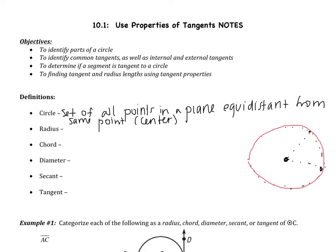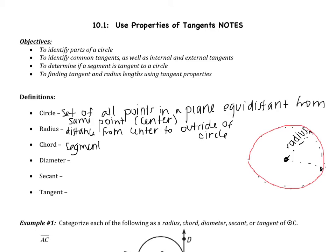That distance from the center to the outside of the circle is called the radius. So in our example, this line segment from center to the circle is the radius. Next, a chord is a segment with endpoints on the circle. It's not a line — it's a segment, meaning it has a beginning and an end, and both the beginning and end are on the circle.